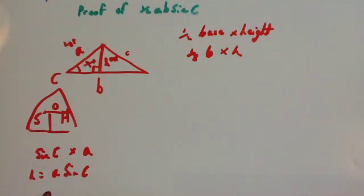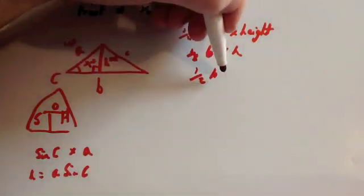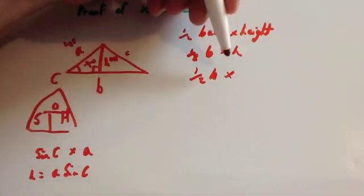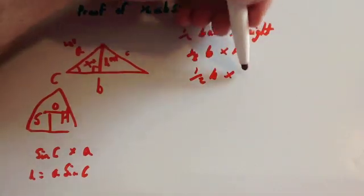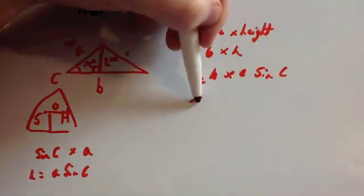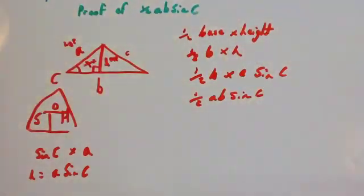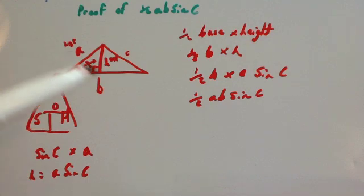So now what we are going to do is substitute this in for the h. So we get half of the base times, or half of b, times a sine C. And if we just rearrange this, we get a half - put this in alphabetical order - a b sine C. So there you go, that's the proof that the area of a triangle is a half a b sine C.